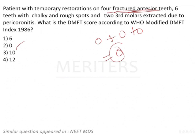Everyone will have a doubt here because temporary restorations are included — but only on a caries tooth. Here, the question clearly mentions fracture. If the question had said temporary restorations on 4 anterior carious teeth, that would be 4, and with two third molars due to caries that would total 6. But since fractured teeth and pericoronitis are given, the reason excludes them. So the answer is clearly 0.